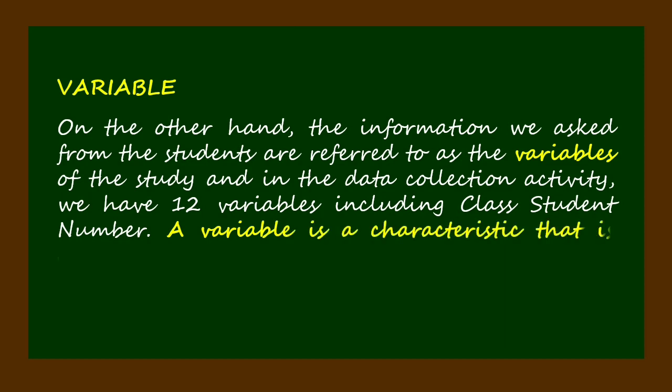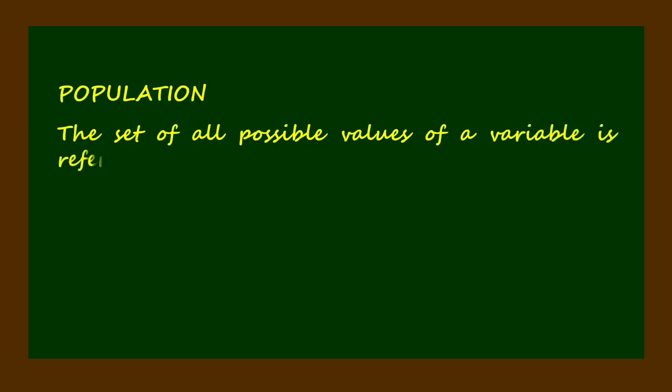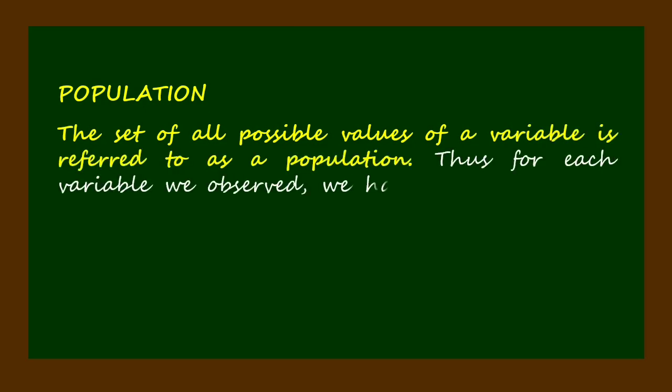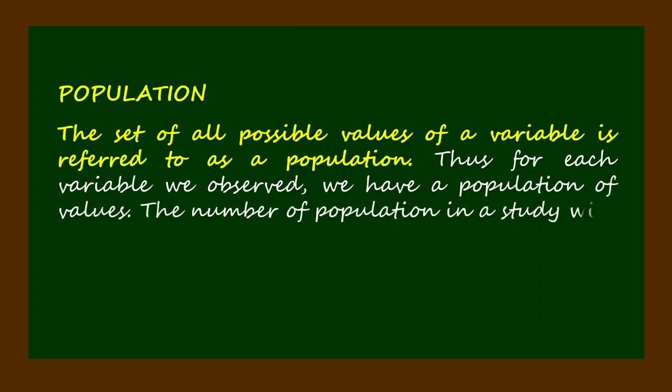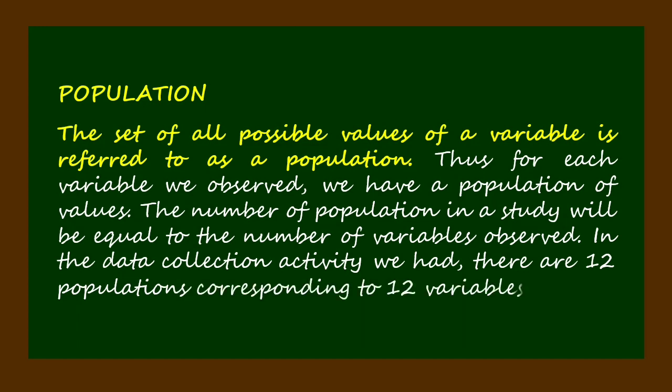A variable is a characteristic that is observable or measurable in every unit of the universe. The set of all possible values of a variable is referred to as a population. Thus, for each variable we observed, we have a population of values. The number of populations in a study will be equal to the number of variables observed.